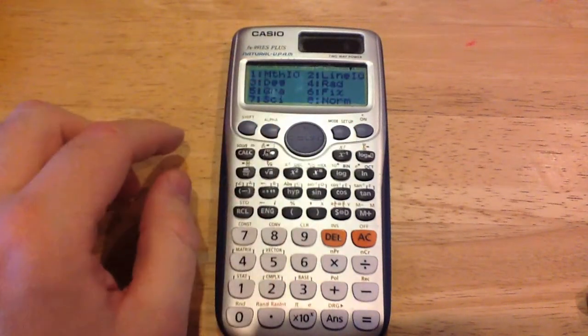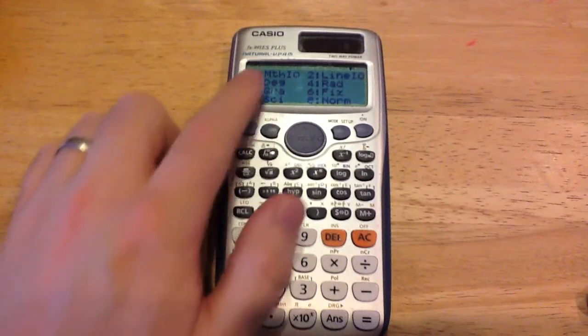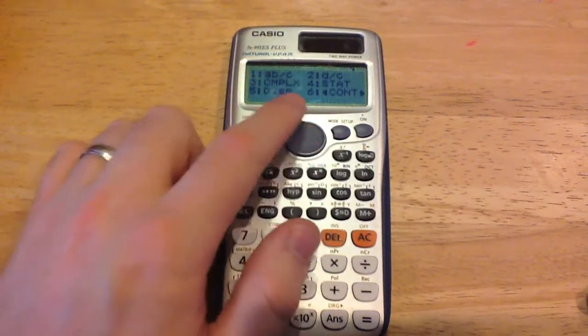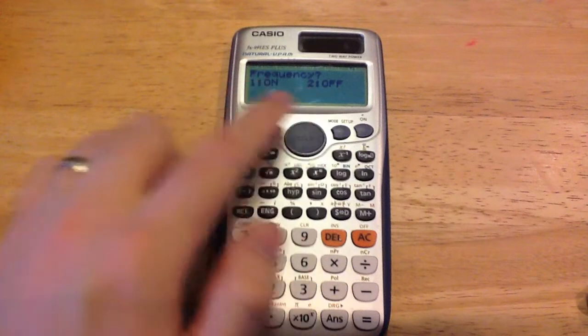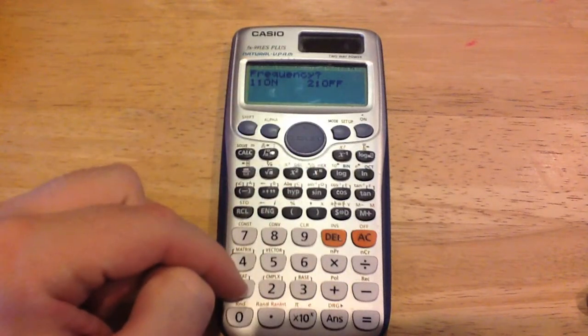The reason is we want our table to have a frequency column. So we've got some options here, we're going to press down, and number 4 you can see the word stat, so we press that, and it says frequency on or off, we want to turn the frequency on.